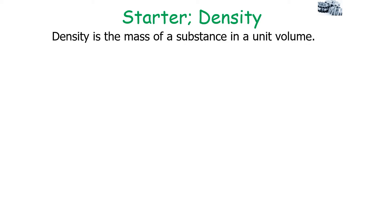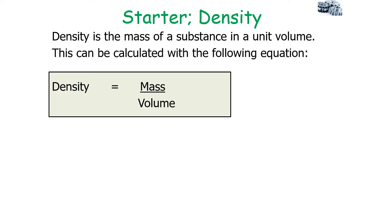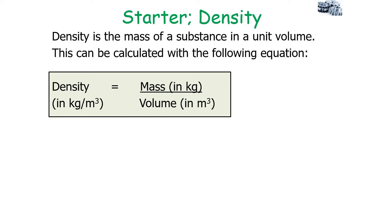Density is the mass of a substance in a unit volume, and we can calculate density with the following equation: density is equal to mass divided by volume. The standard units of density are kilograms per metre cubed, which are the SI-derived units of density, when we measure mass in kilograms and volume in metres cubed.